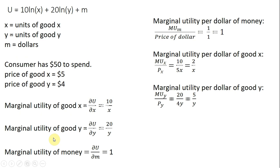The marginal utility of good y, in a similar manner, we're going to take the partial derivative of the natural log of y, which is just 1 over y, and we're going to multiply that by 20. And then the relatively easy one here, the marginal utility of money, the partial derivative of m, is just 1.